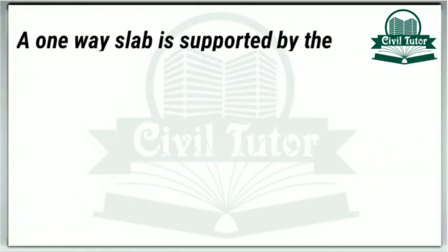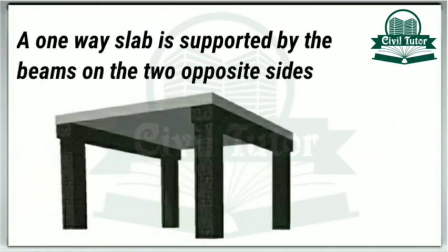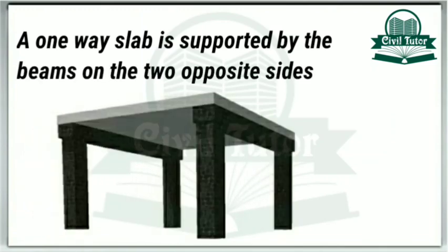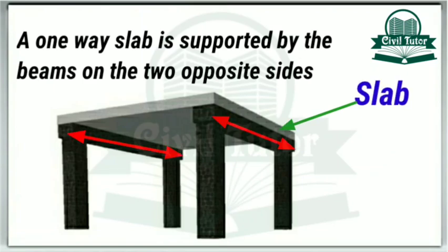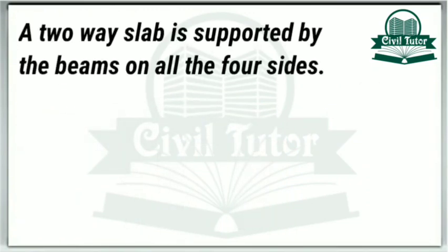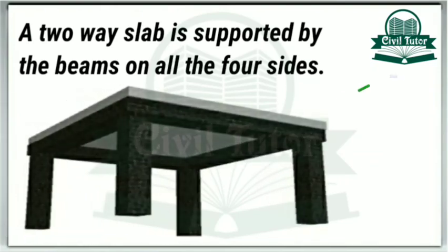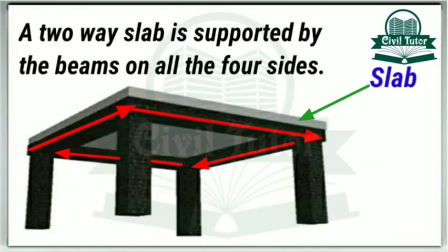A one-way slab is supported by the beams on two opposite sides, as shown in this figure. Whereas a two-way slab is supported on all four sides by beams.